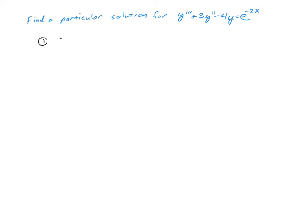So we need to make sure that we solve y triple prime plus 3 times y double prime minus 4 times y is equal to 0. So we're going to have an auxiliary equation of r cubed plus 3r squared minus 4 is equal to 0.